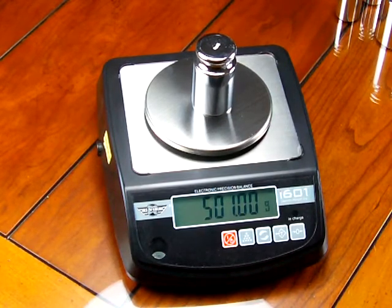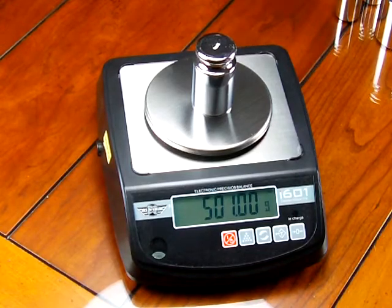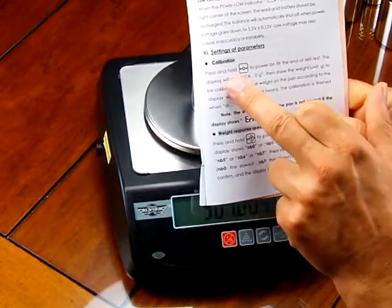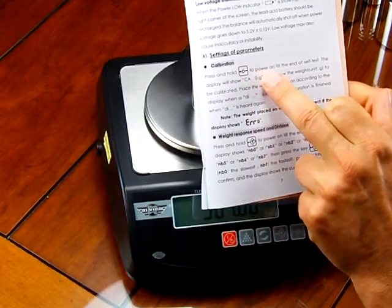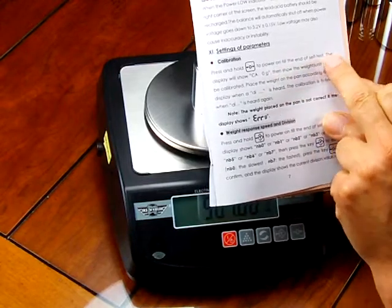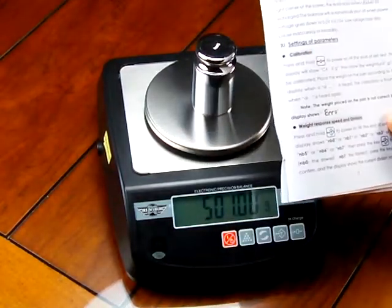So to calibrate the scale, the manual states and it's really not the clearest. The manual is right here on calibration. It's saying press and hold the zero to power on till the end of the self test. Some people might not understand what this means.